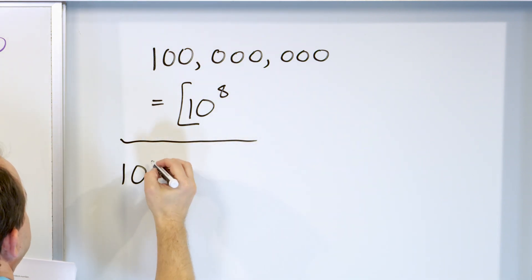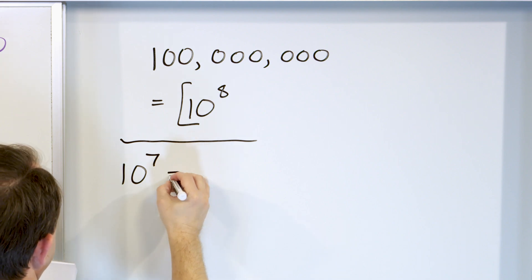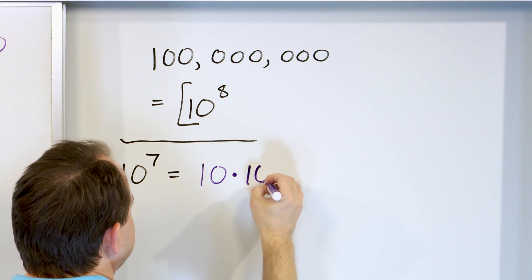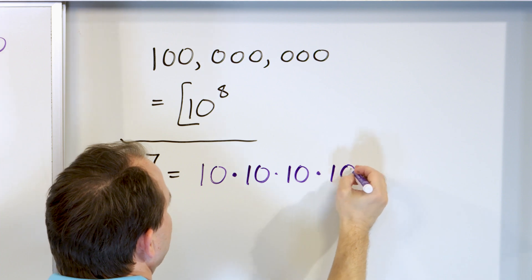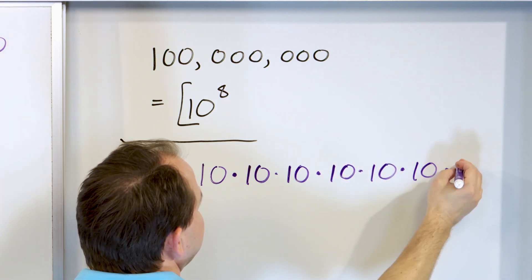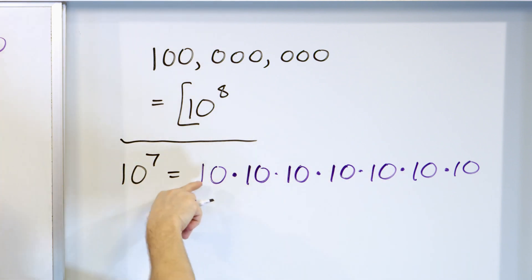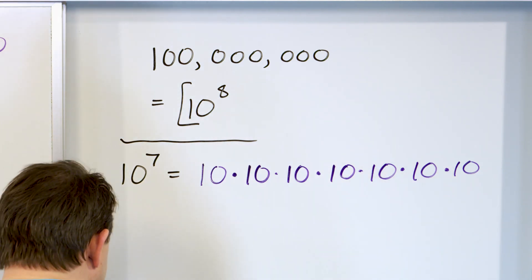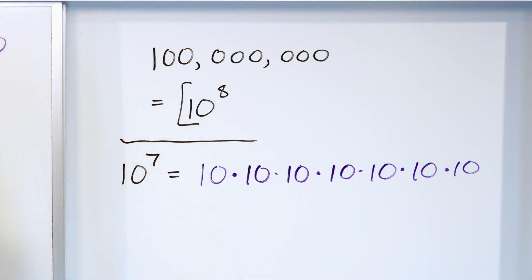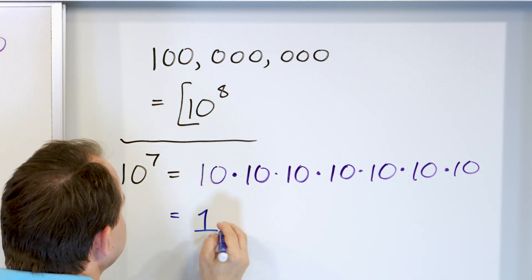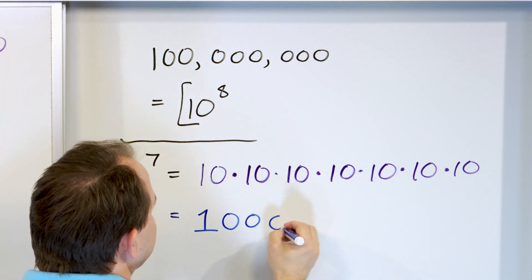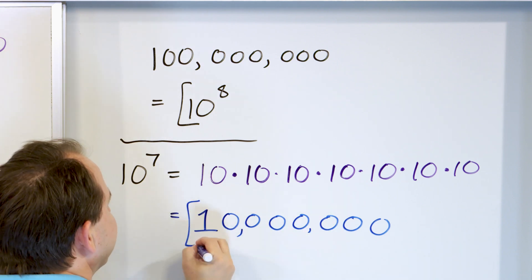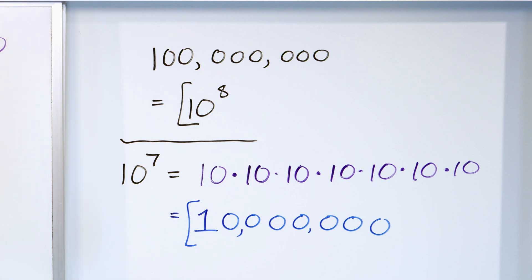Problem eight: take 10 to the power of 7 and write it as a full number. It's 10 times 10 times 10 — seven of them all multiplied together. So it's a number 1 followed by seven zeros: 1, 2, 3, 4, 5, 6, 7. Put commas in the appropriate places and the answer is 10,000,000 — that's 10 million.